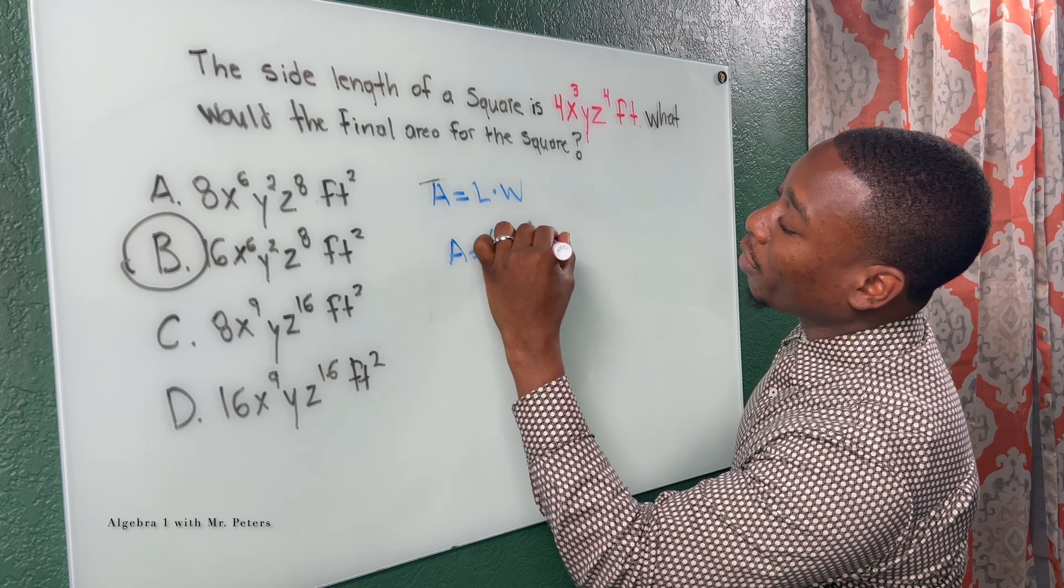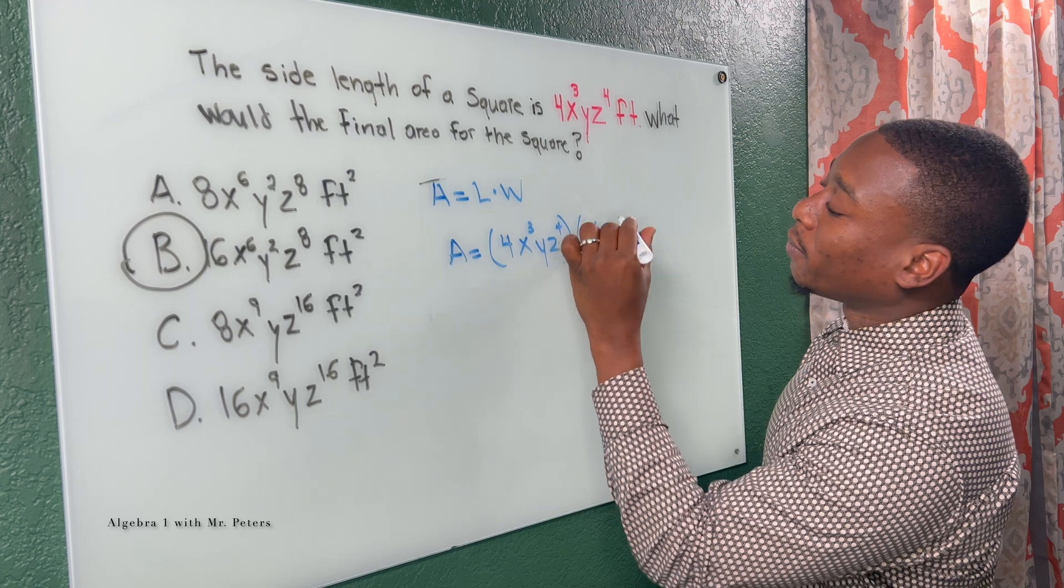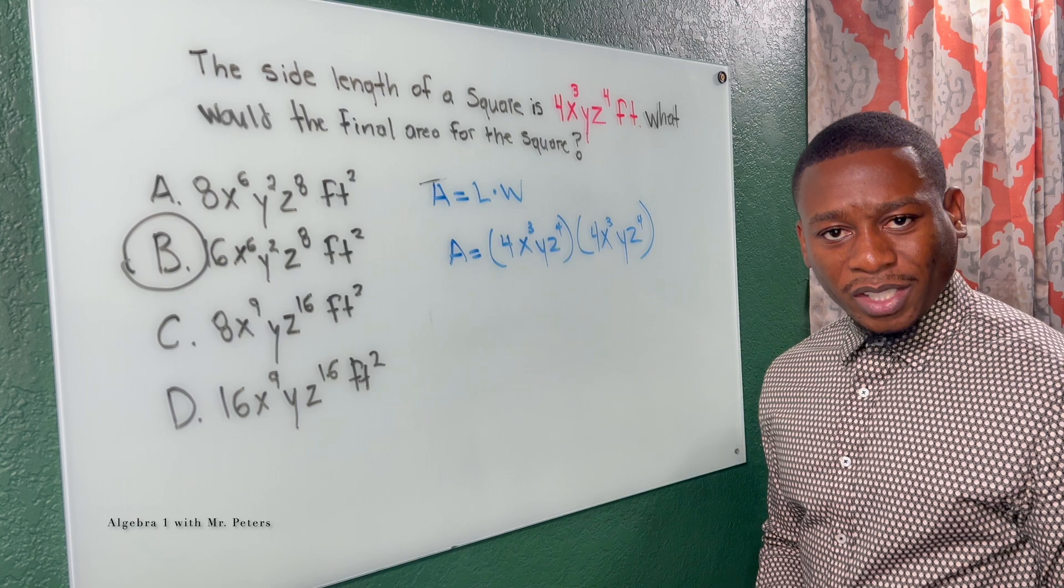4X to the third, Y, Z to the fourth, and we multiply it by itself. So we could do it this way.